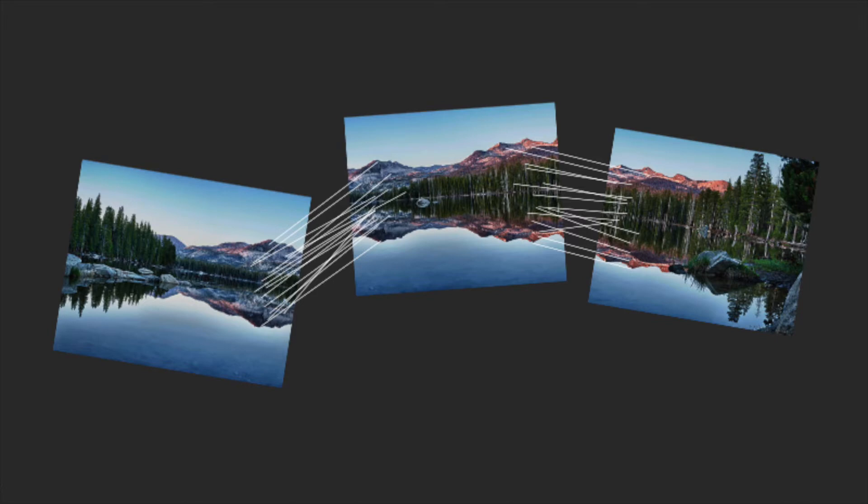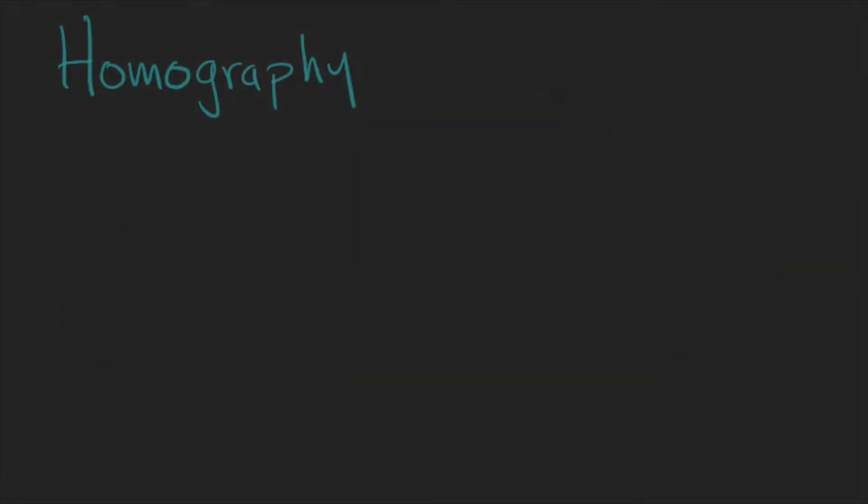The problem can be solved by homography, or in other words, finding a transformation matrix that modifies a source image to register it to the destination image.